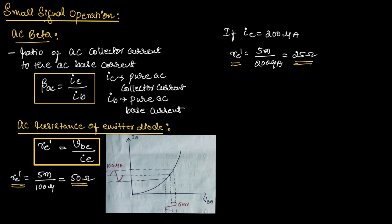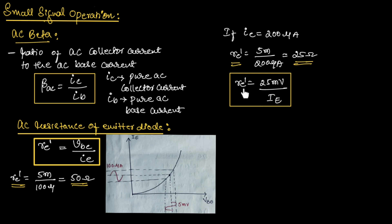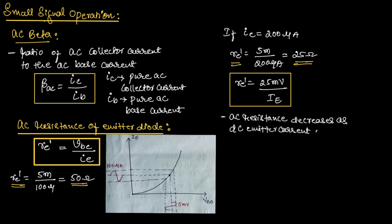So we can write one more formula for AC resistance of the emitter diode: RE' equals 25 millivolts divided by DC emitter current. This is the standard formula for AC resistance of the emitter diode. From this formula, we can say that the AC resistance of the emitter diode decreases when the DC emitter current increases, because the value of VBE remains constant.